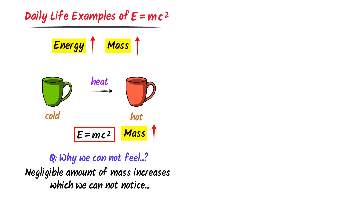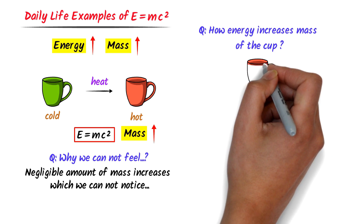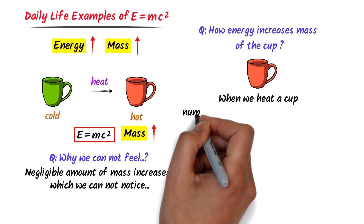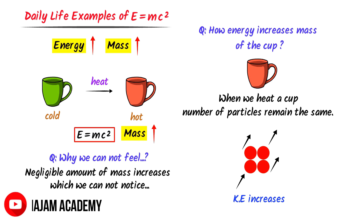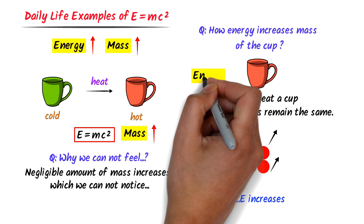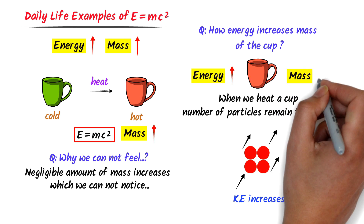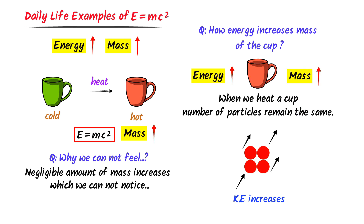You may also be thinking: how does energy increase the mass of a cup? It is simple. When we heat a cup, the number of molecules or particles remains the same — it doesn't change. Rather, the kinetic energy of every molecule increases. We have already learned that energy becomes mass and vice versa. So if the kinetic energy of a particle increases, its mass also increases, but we cannot notice it in daily life because it increases to a very little extent. Therefore, if we increase the energy of an object, its mass also increases. Using this logic, we can understand mass, energy, and the universe.